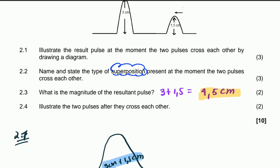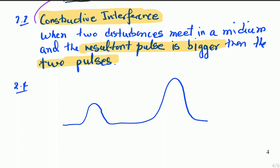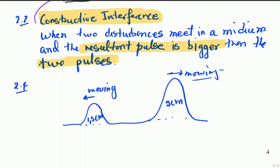Question 2.4 asks you to illustrate the two pulses after they cross each other. Importantly, the pulses cross each other — they don't bond. The 1.5 cm pulse continues in the same direction it was originally moving, and the 3 cm pulse continues in the direction it was originally moving. Each pulse maintains its original size and direction after crossing.